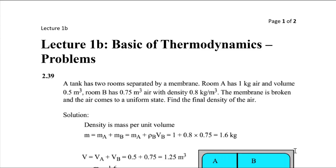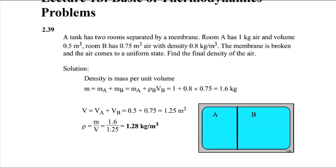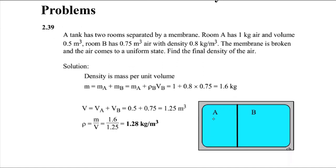Problem number 2.39: a tank has two rooms separated by a membrane. Room A has 1 kg of air and a volume of 0.5 cubic meters, while Room B has a volume of 0.75 cubic meters with a density of 0.8 kg per cubic meter. The membrane is broken and the air reaches a uniform state. Find the final density of the air.